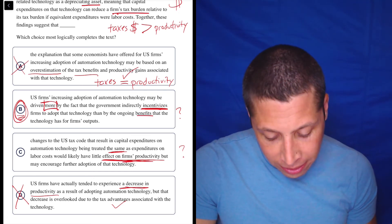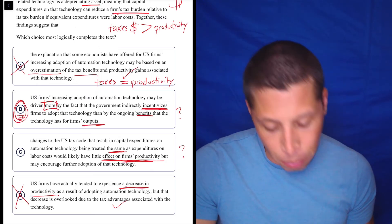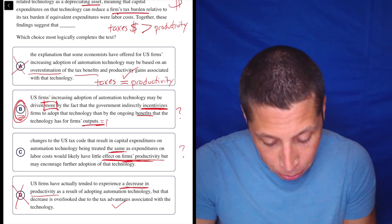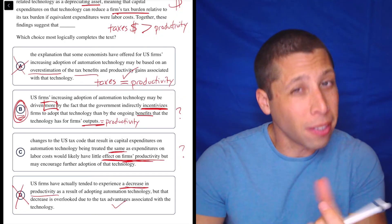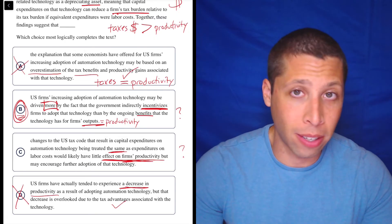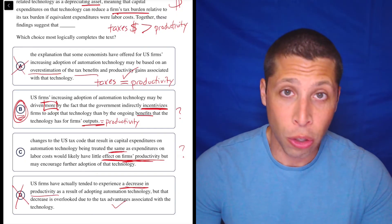Then we can go to the other part. Then by ongoing benefits that the technology has for firms' outputs. Well, this is a direct synonym. What is an output? Output is productivity. So this is exactly what I'm talking about. The other part is a little bit more twisted, but here it's a dead-on synonym. They could have just used the word productivity. Why didn't they? Well, because then it would be easier.